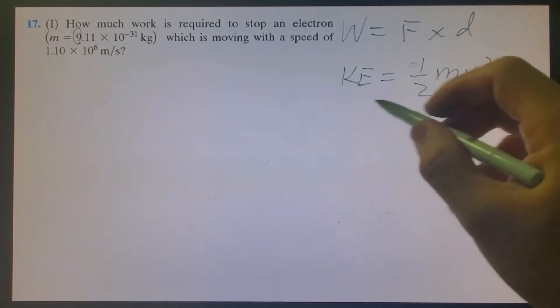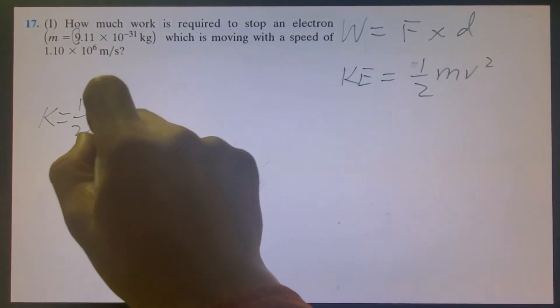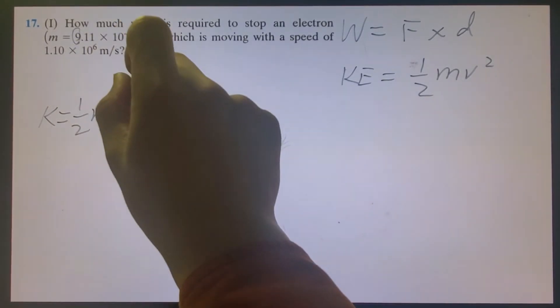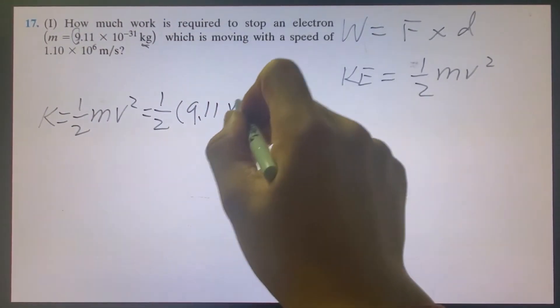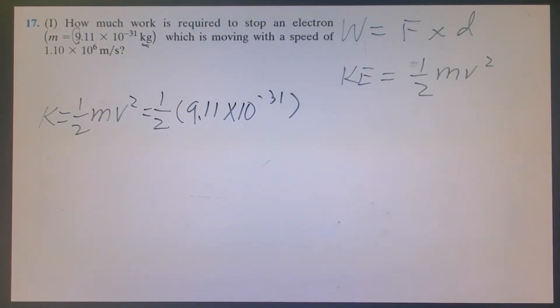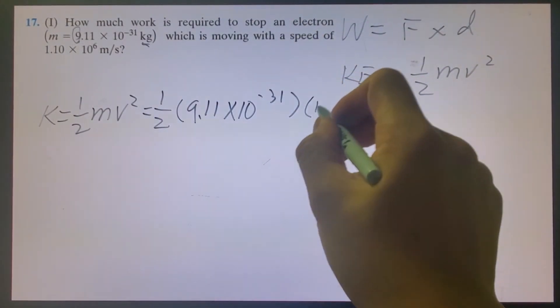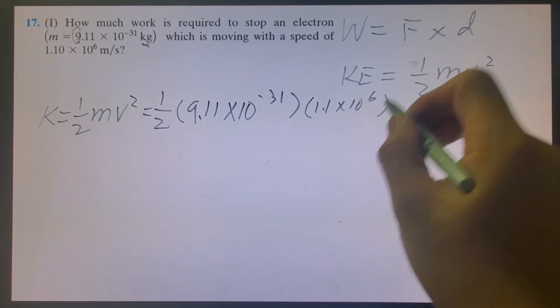So we can plug in over here, kinetic energy KE, that is equal to half times m times v squared. It has the right unit. So, 9.11 times 10 to the minus 31. Make sure you know how to enter this number in your calculator. Times v squared. So v is 1.1 times 10 to the 6 meters per second, squared.